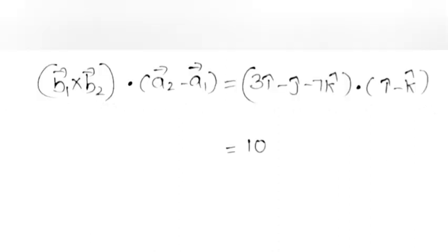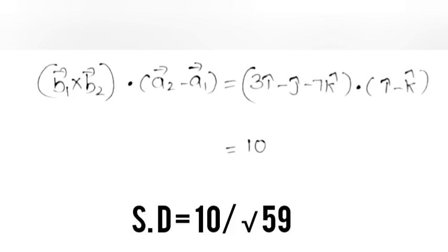B1 × B2 · (A2 − A1) = (3i − j − 7k) · (i − k) = 3 + 0 + 7 = 10. Shortest distance = |10|/√59 = 10/√59.